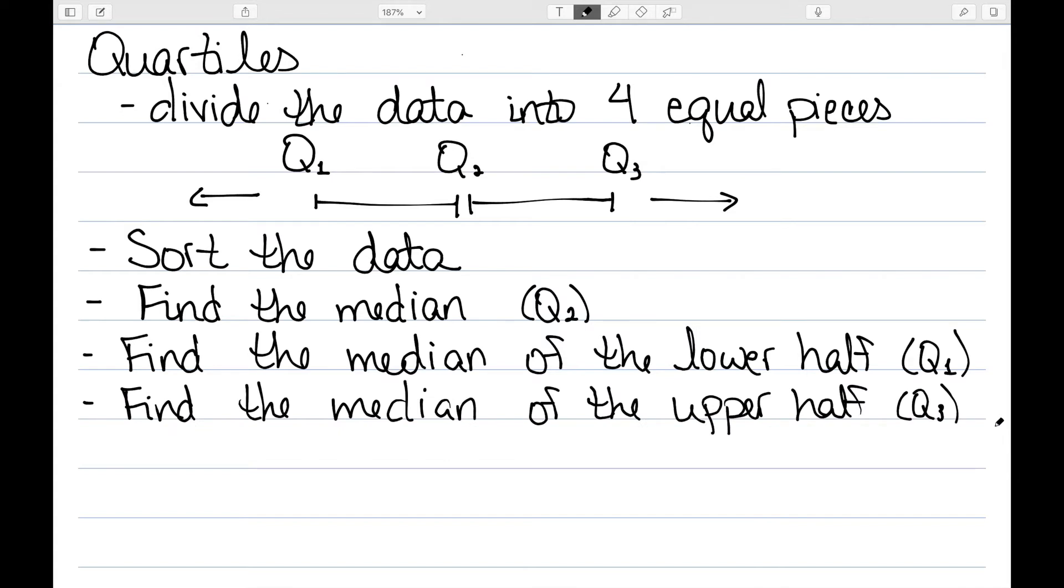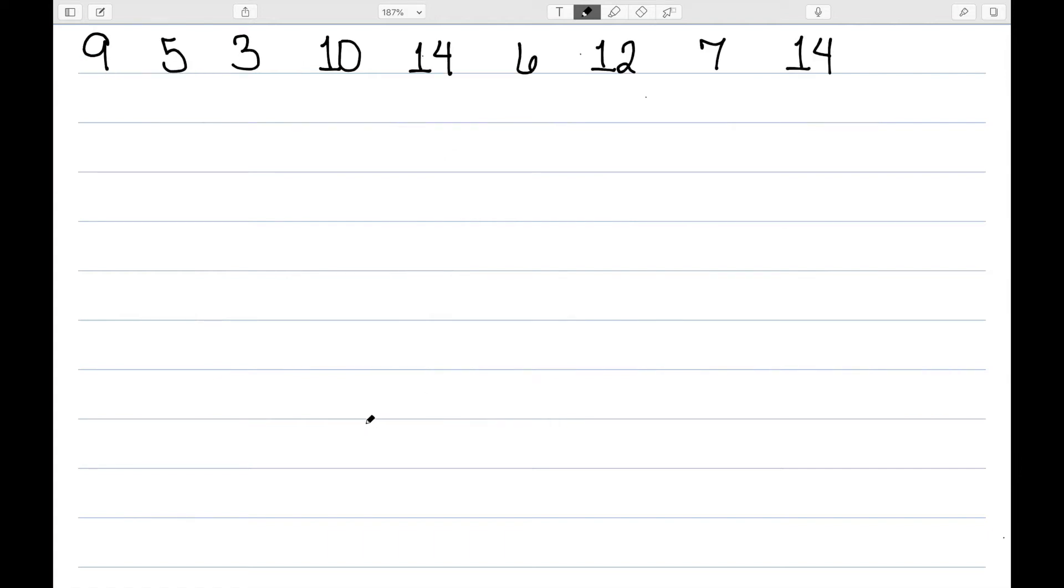So let's look at an example. We have the data values 9, 5, 3, 10, 14, 6, 12, 7, and 14. The first step is to sort these from smallest to largest. So here I have them sorted. We know to find the median we need to find the number in the middle, which is going to be this 9. It has four numbers below and four numbers above. So that tells me that Q2 is equal to 9.